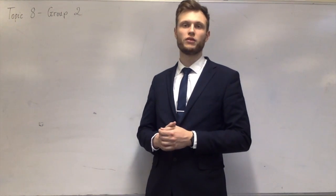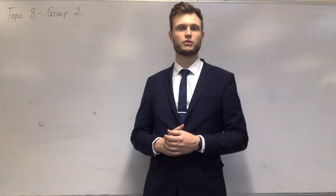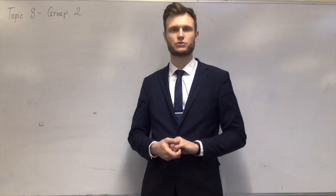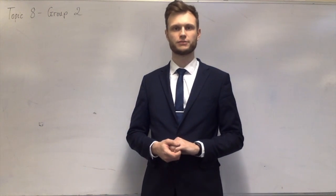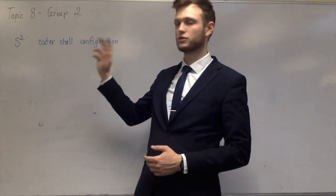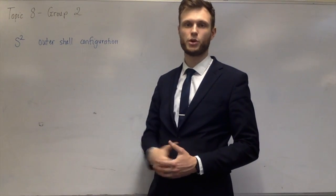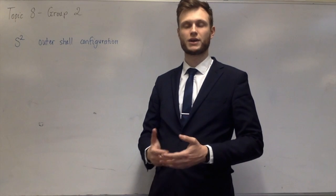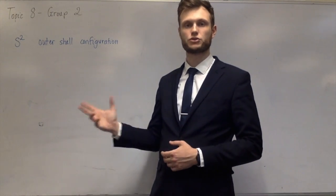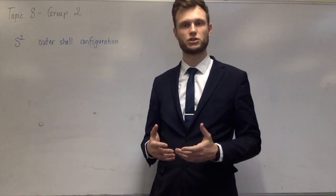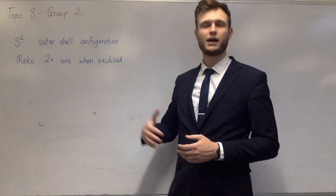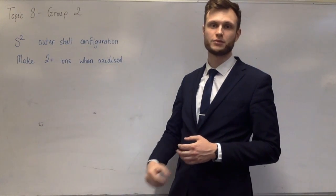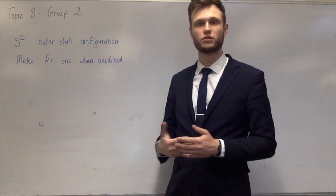All of the metals in group 2 have an S2 outer shell electron configuration, meaning the outer shell has two electrons, both in an S orbital. When group 2 metals react, they make 2+ ions, so they have an oxidation number of 2. As you go down the periodic table from magnesium down to barium, they get more and more reactive.